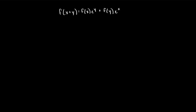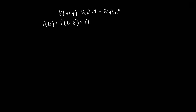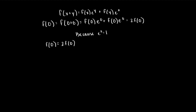A common first step with functional equations is to try to identify the value of the function at a specific value. For example, let's find the value of f of 0. We have f of 0, which is equal to f of 0 plus 0, which equals f of 0 times e to the 0 plus f of 0 times e to the 0, which is equal to 2 f of 0, because e to the 0 is equal to 1. This implies that f of 0 is equal to 2 f of 0, and in other words, f of 0 is equal to 0.